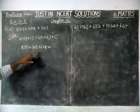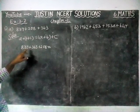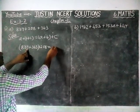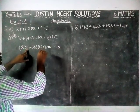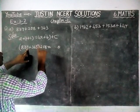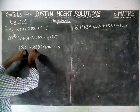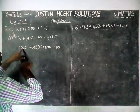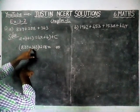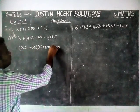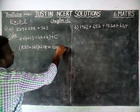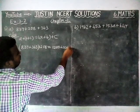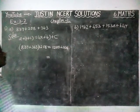Now we are going to add it. 3 plus 7 is equal to 10, carry 1. 3 plus 6 is 9, plus 1 is 10, carry 1. 8 plus 3 is 11, plus 1 is 12. So we get 1200 plus 208.